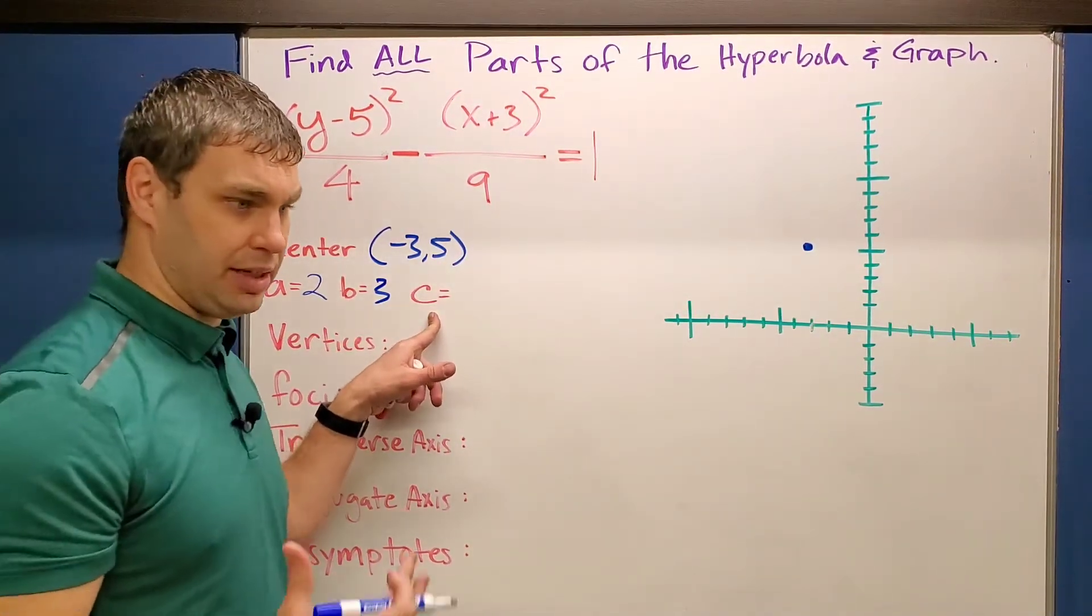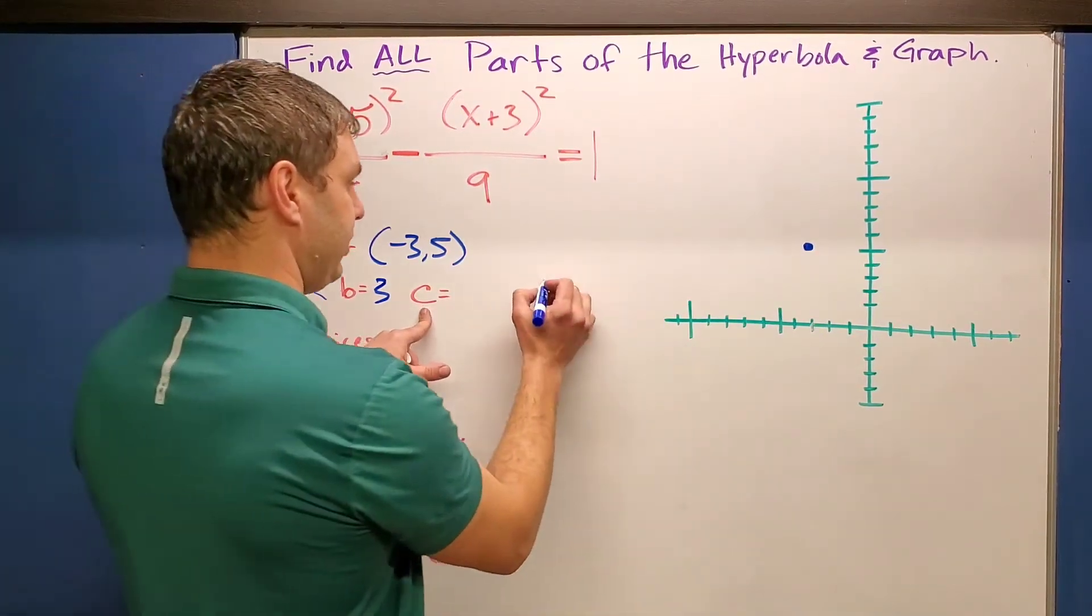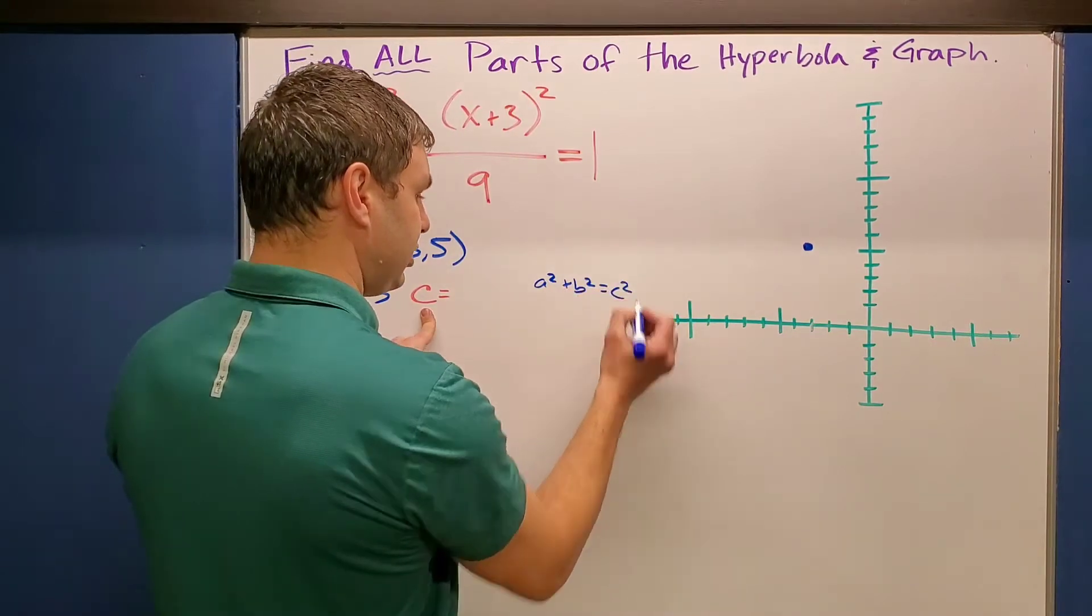And then our c value, what we use is, it looks almost, it is actually the Pythagorean theorem, a squared plus b squared equals c squared. And we're trying to find the c.